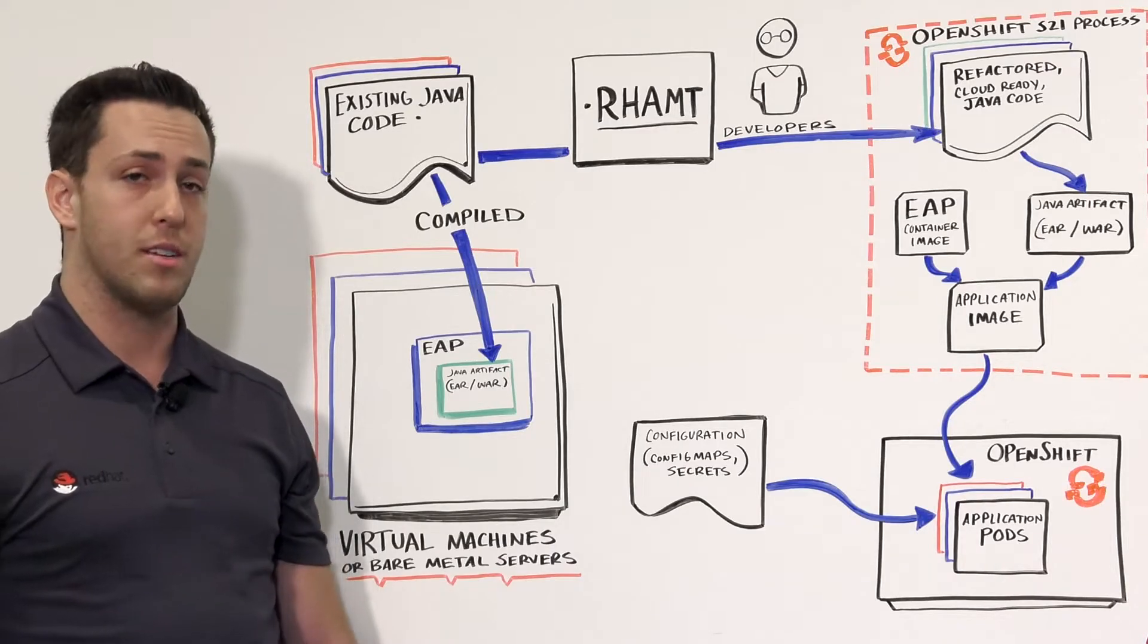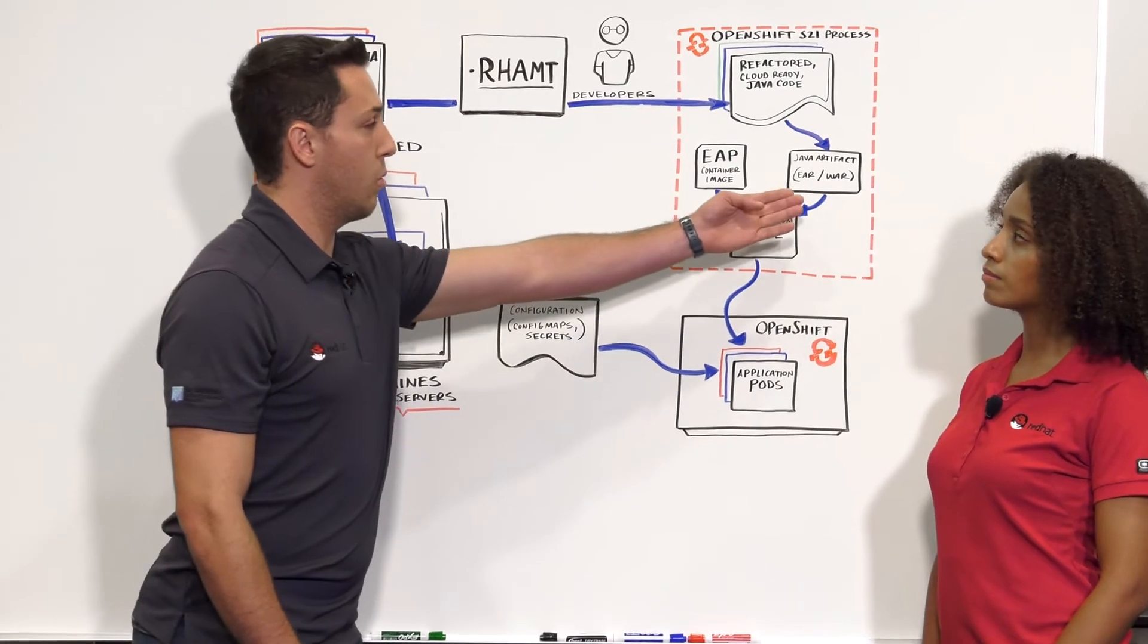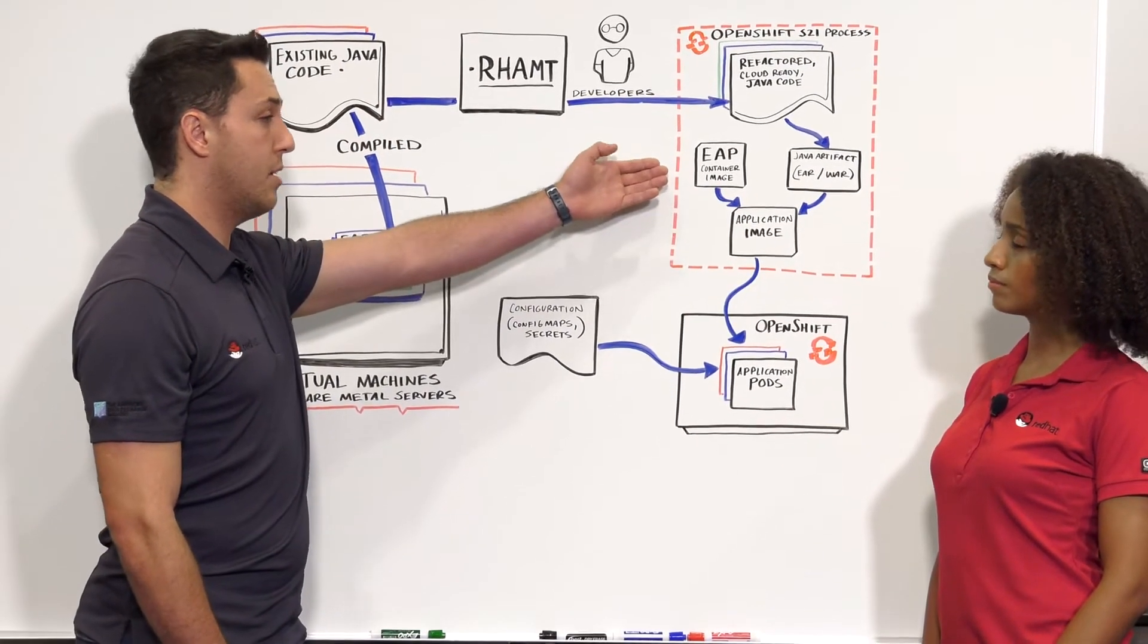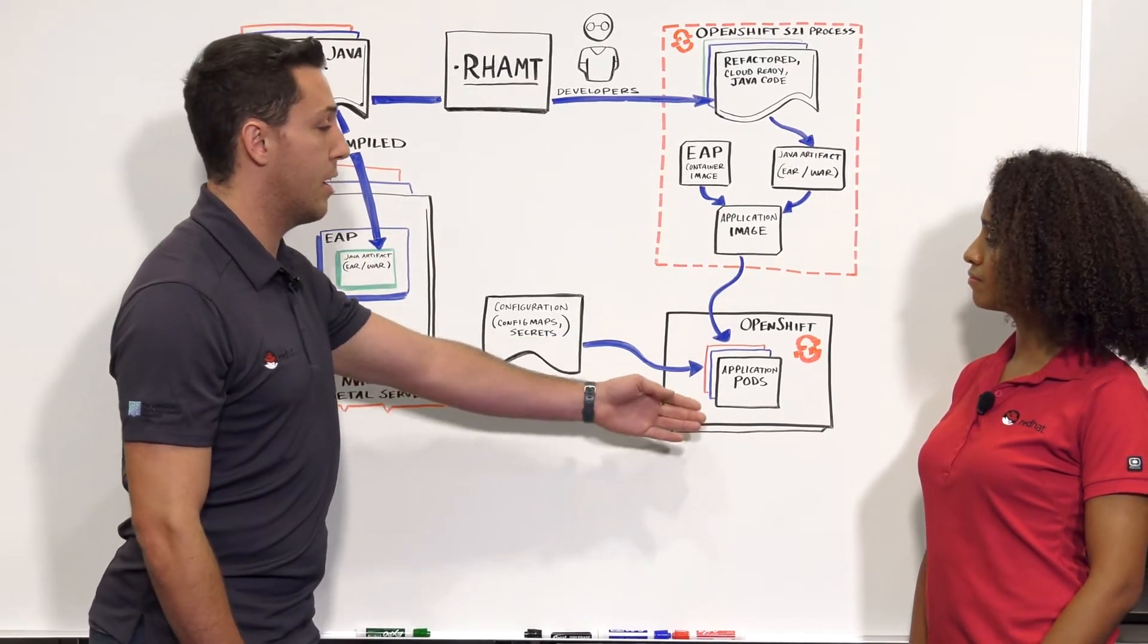The first step of this process is to set up a template, which is essentially just a build outline. It can include processes like building your WAR or your EAR, deploying that WAR onto your app server, which in our case is EAP, and packaging that onto an image and deploying it onto a pod in OpenShift.